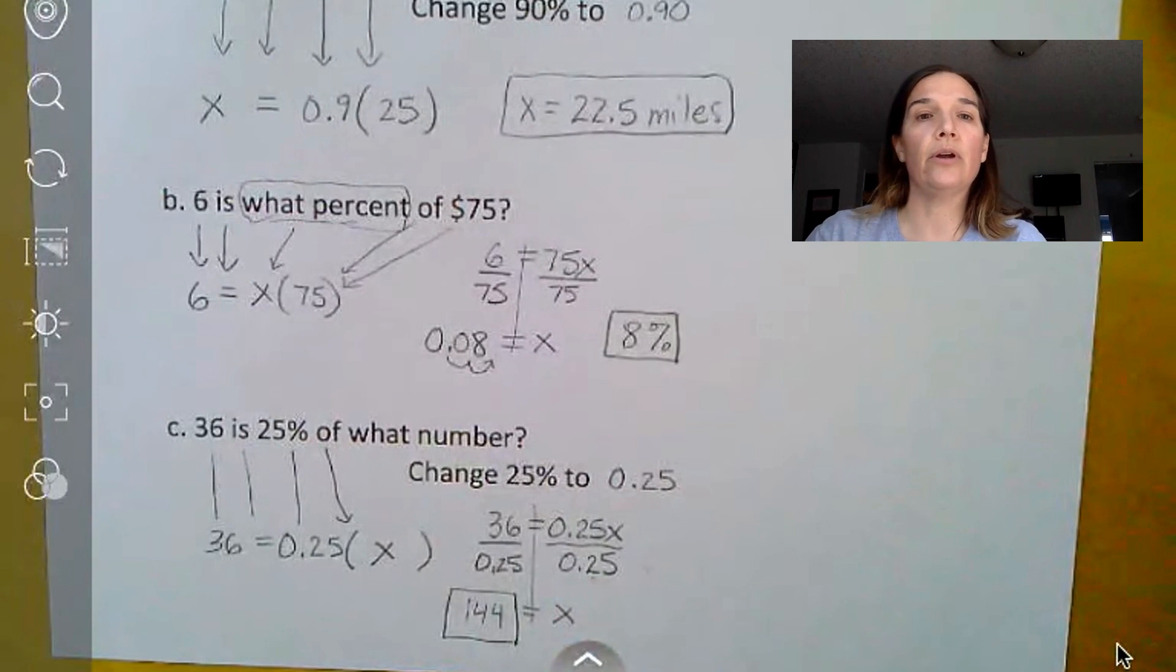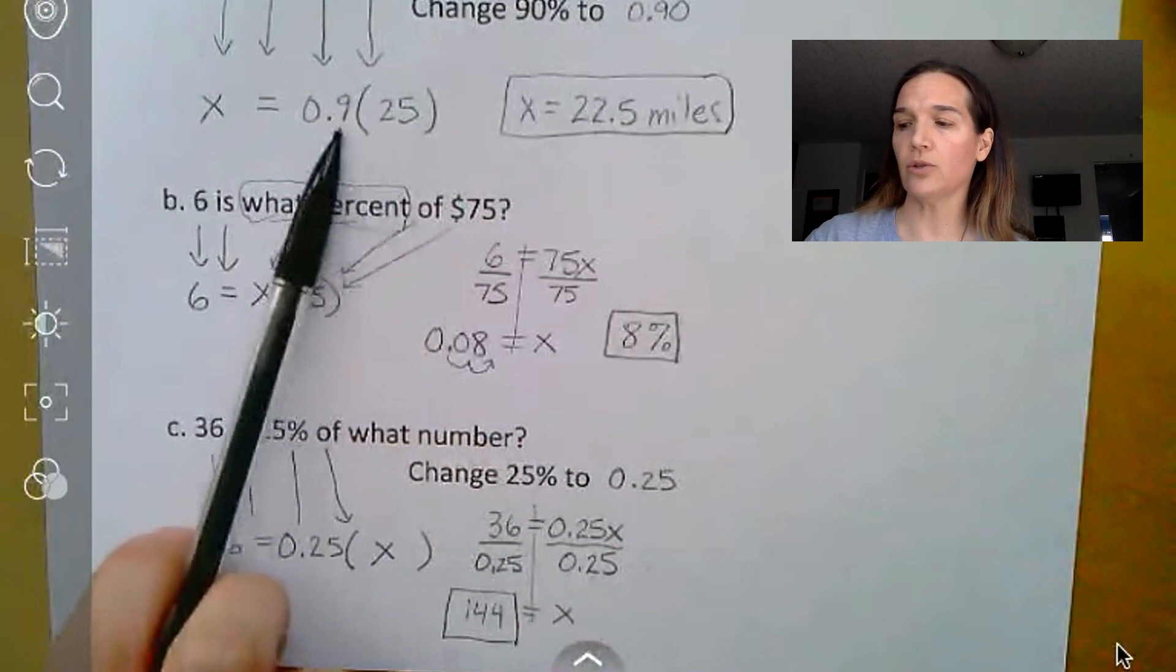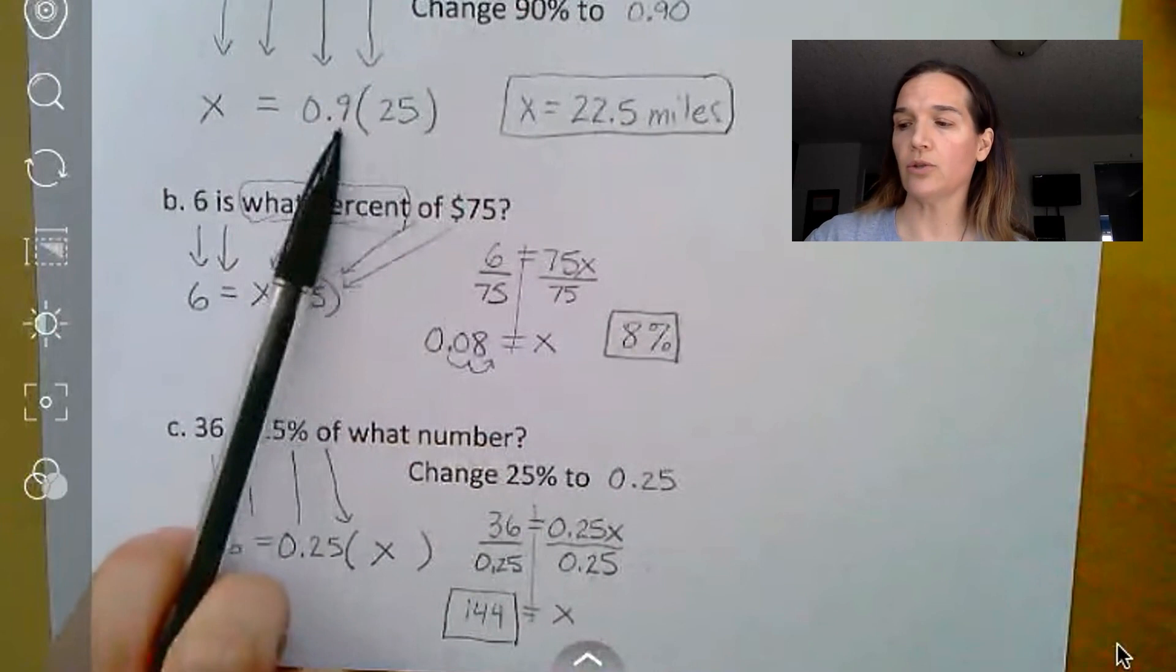So when you're solving these, basically you are going to end up with one of two scenarios. You'll already have x all by itself, in which case you just multiply the two. Or you'll have x on the same side as a number, so you'll divide both sides by that number in order to solve for the missing one. All right. I will see you later. Hope you enjoyed. Bye!